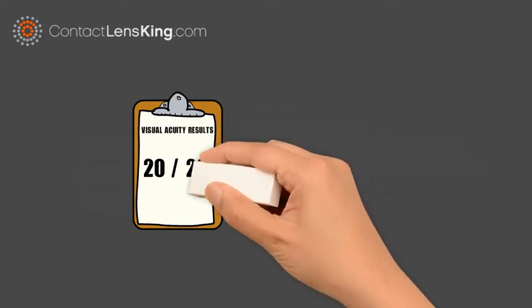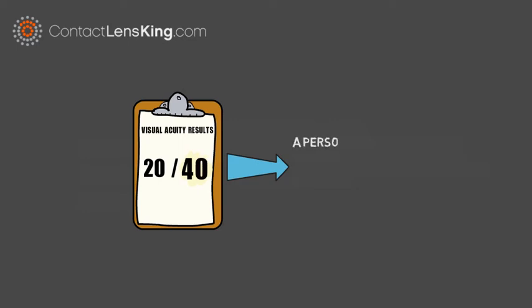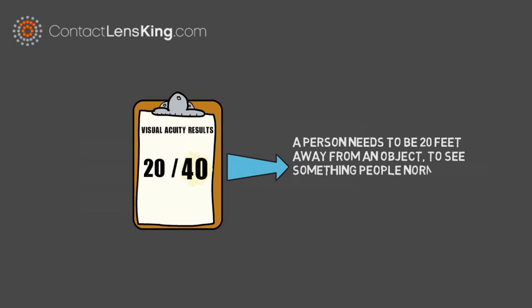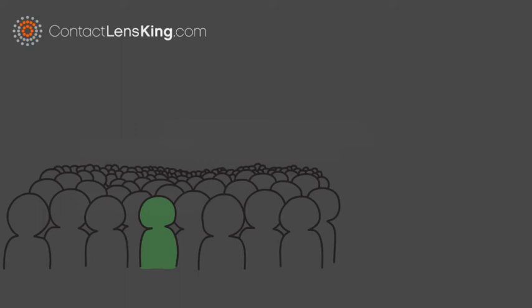If a person has 20/40 vision, it means they need to be 20 feet away from an object to see something people normally see at 40 feet. If a person's visual acuity is not 20/20, it could indicate the need for corrective glasses or contacts.